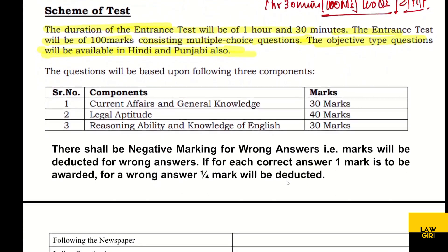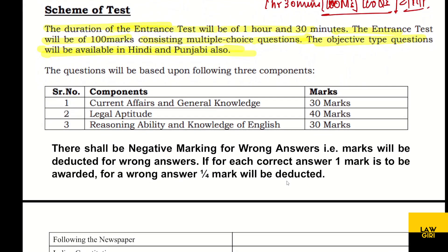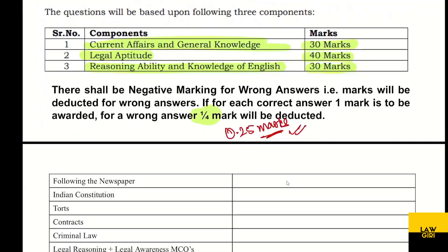The marks distribution is very important. Current Affairs and General Knowledge are 30 marks. Legal Aptitude is 40 marks. Reasoning Ability and Knowledge of English is 30 marks. There is negative marking of 1/4, that is 0.25 marks — if you give a wrong answer, marks will be deducted.